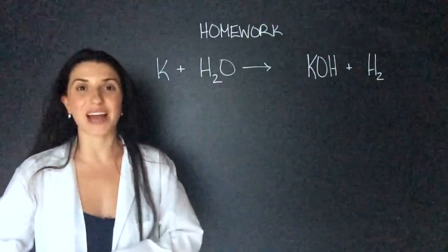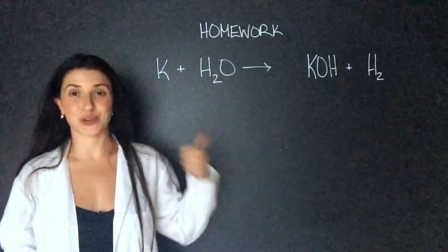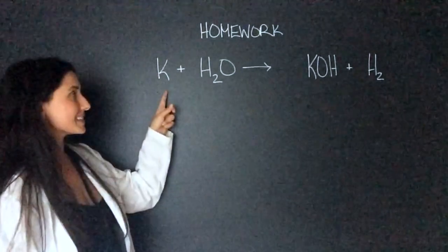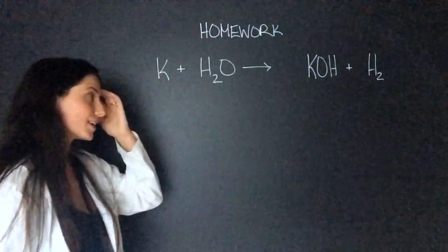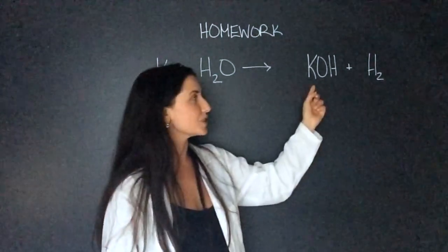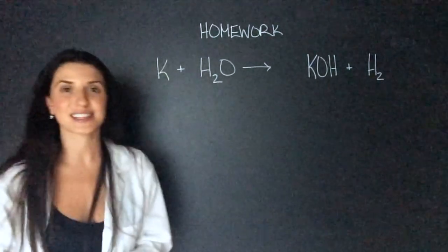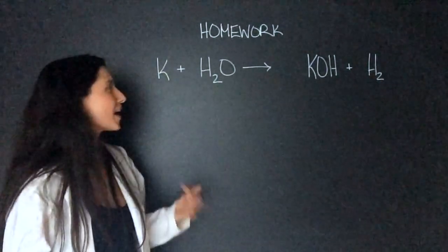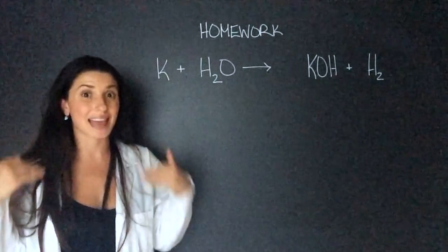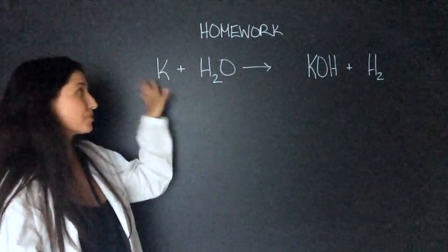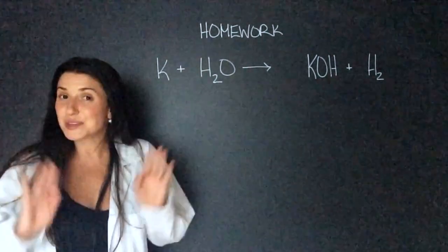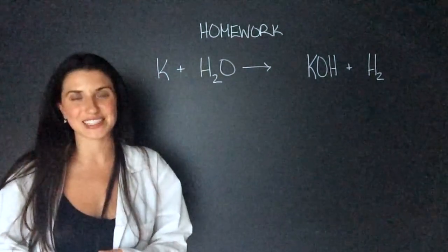For homework today, I would like you to try to balance this equation. Here we have potassium reacting with water, creating potassium hydroxide and hydrogen gas. Remember to do whatever is on its own last. So in this case, I would save potassium for last, but do what you want and I'm sure you'll find the right answer.